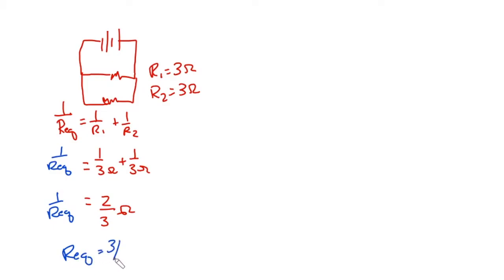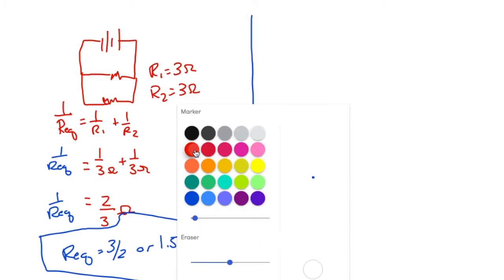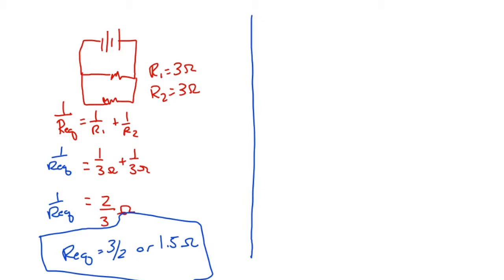Now guys, so important here, guys: don't forget it's 1 over REQ. All right, so REQ is really 3 over 2, or 1.5 ohms. Do not forget to take the reciprocal. Like I cannot say it enough, it's crazy how many students get that wrong when they don't need to. Don't forget to take the reciprocal, please, please, please, please.